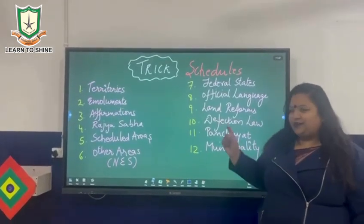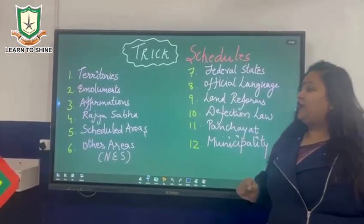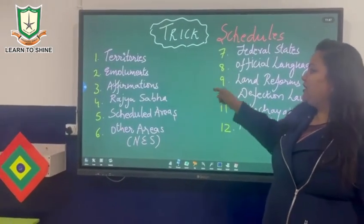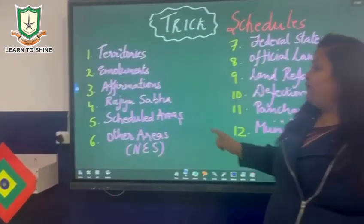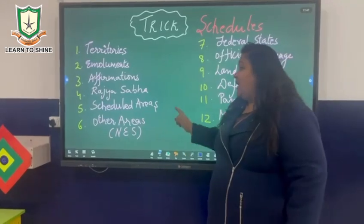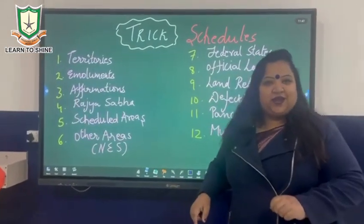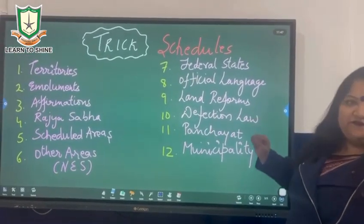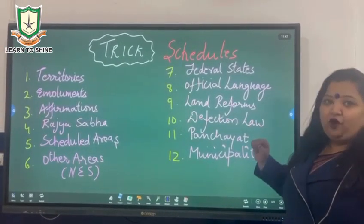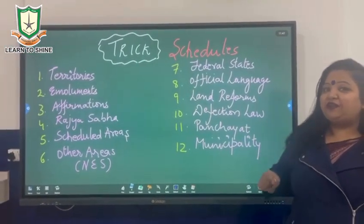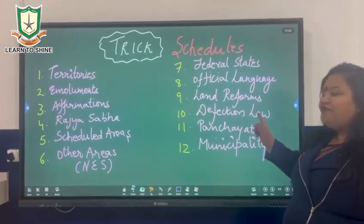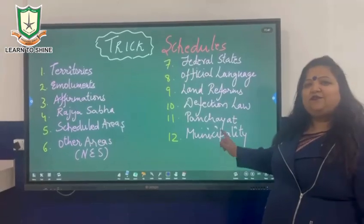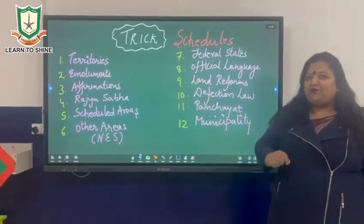The 1st schedule tells about the territories, 2nd about the monuments, 3rd about the affirmation, 4th about the Rajya Sabha, 5th schedule covers areas, 6th other areas like north eastern states, 7th federal states, 8th official languages, 9th land reform which was later added in 1951, 10th defection law, 11th panchayat and 12th is the municipality.